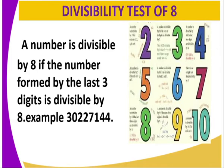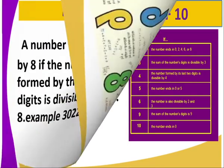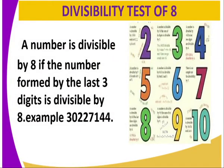What you normally ask yourself is: you get the last 3 digits, then you ask, is it divisible by 8? Our last 3 digits here are 144. Is 144 divisible by 8? Let us divide. How many times does 8 go into 14? Only one time. 14 minus 8 gives you 6, and 64 divided by 8 gives you 8. So here you are getting 18 — so 144 is divisible by 8. That means the number 3,022,7144 is divisible by 8.